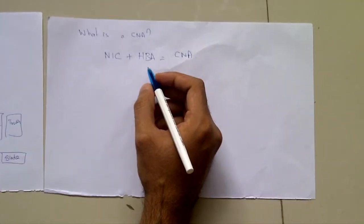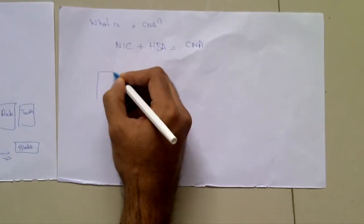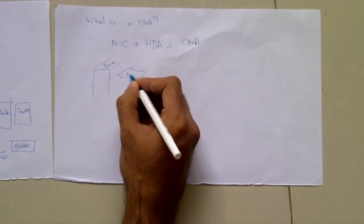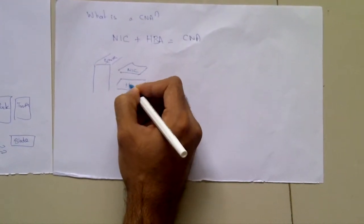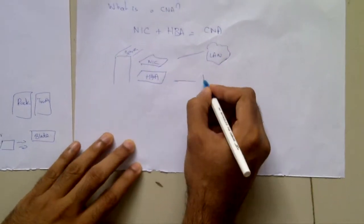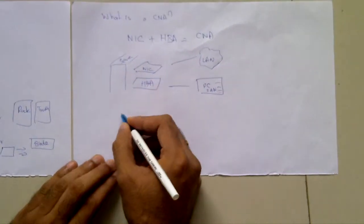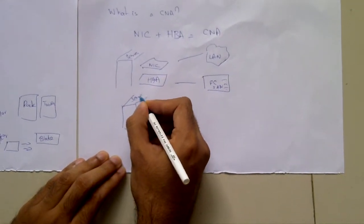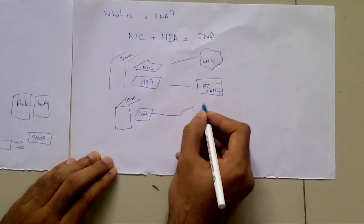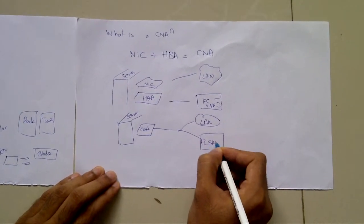The advantage is instead of having a server and two separate cards—one that connects to a LAN and one that connects to a FC SAN—in a CNA you have one card that connects to a LAN and an FC SAN, thus saving on infrastructure and cabling cost.